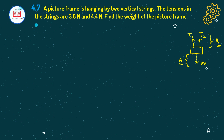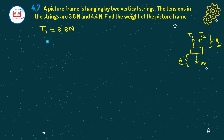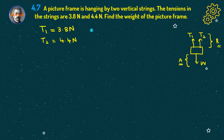The data given: we have two tensions T1 and T2. T1 equals 3.8 newton and T2 equals 4.4 newton. We need to find the weight W of the picture frame.